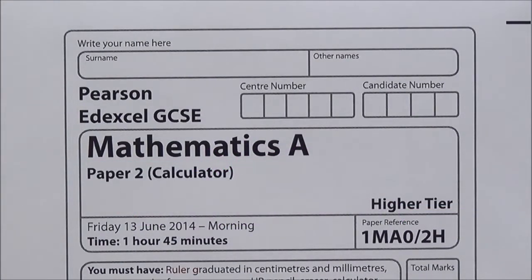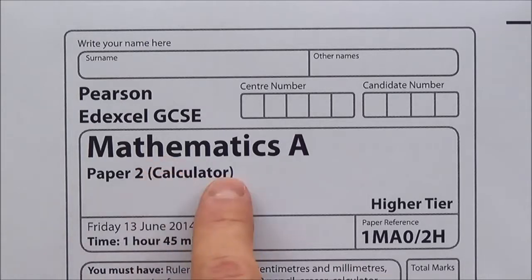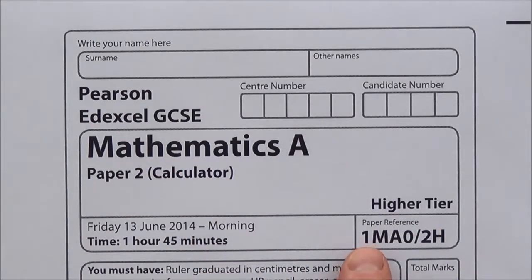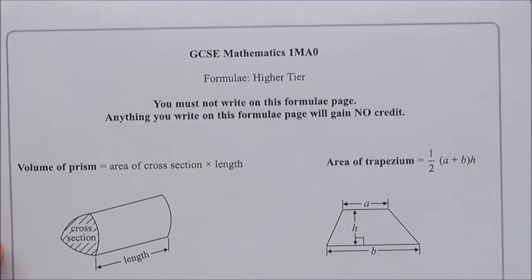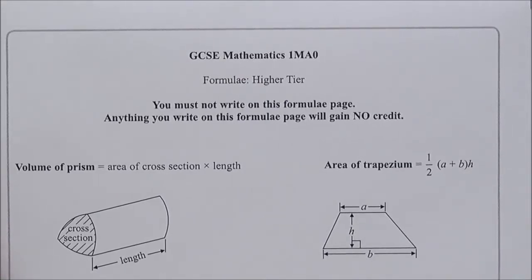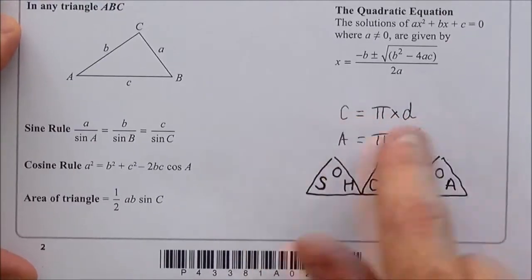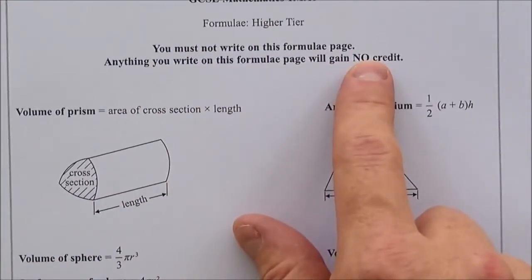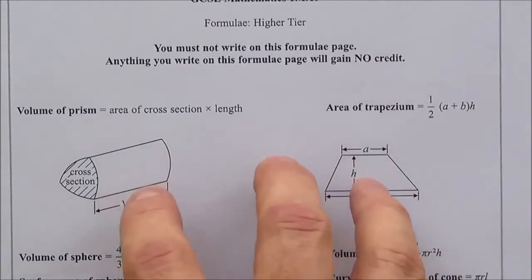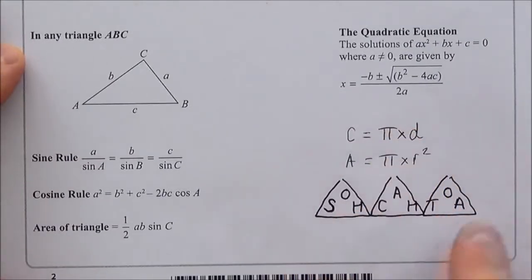In this clip we're going to work our way through the Edexcel June 2014 calculator higher tier exam paper, code 1MA02H. The first page is the formula sheet, and it's important to remember this sheet as you work through the exam paper because there may be something on here that can help you gain marks. I've added a couple of extra formulas that I'm trying to remember - not for marks, just to help me glance back at later.